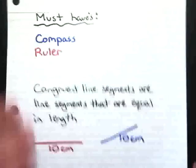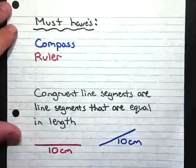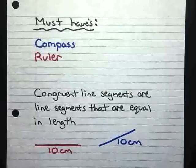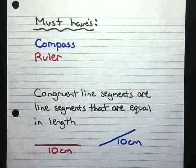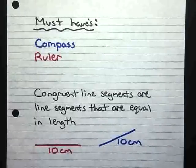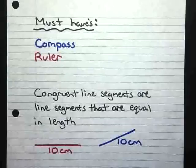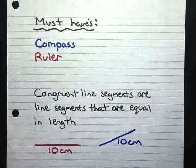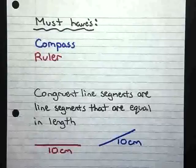Before we get started here, there's a few things that you're going to have to make sure that you have. First, you need to make sure you have a compass and ruler. So if you don't have those two things right now, go ahead and pause the video and get them, and then come back and hit play and continue on with the video. If you do, let's go ahead and get started with the rest of the lesson.